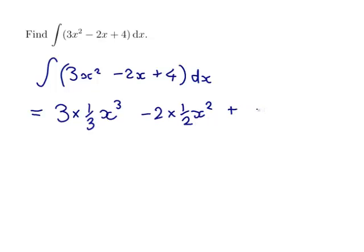And 4 is just a constant, so if we integrate that, it'll go up to 4x. And it's an indefinite integral, so I'll put a plus C. So we get 3 times a third is 1, so x³. 2 times a half is 1, so x². Plus 4x plus C.